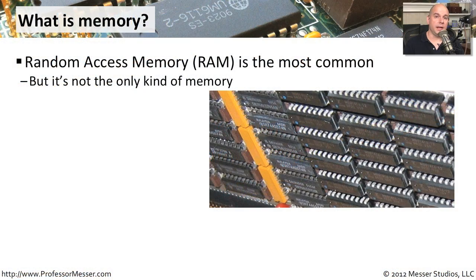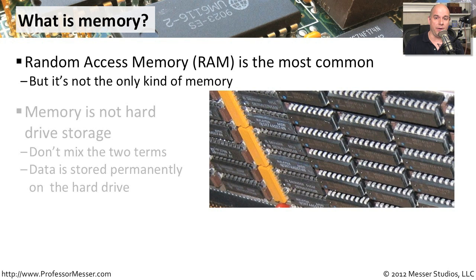One of the key components inside of our computers is the memory. We're usually referring to memory as the random access memory — the amount of total RAM storage that you might have for that computer. There are all kinds of different memory inside of your computer, but when we're commonly talking about memory, we're usually talking about the RAM, though there may be occasions where we're talking about certain types of memory that aren't specifically associated with the RAM.